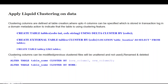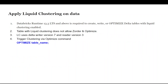If you want to change the clustering columns, you can do that by simply running: ALTER TABLE table_name CLUSTER BY and then define the new columns. If you want to remove clustering entirely, you can run: ALTER TABLE table_name CLUSTER BY NONE.